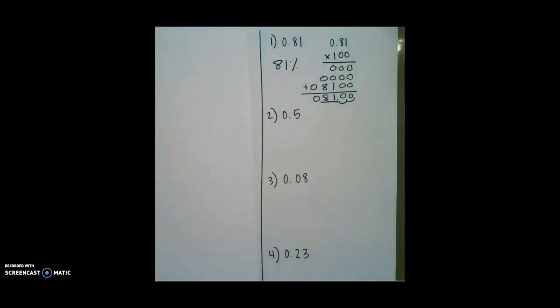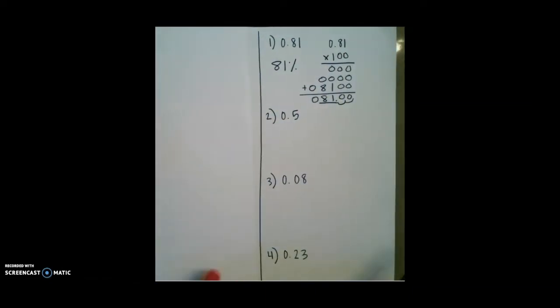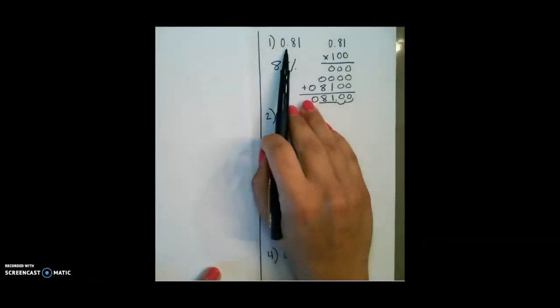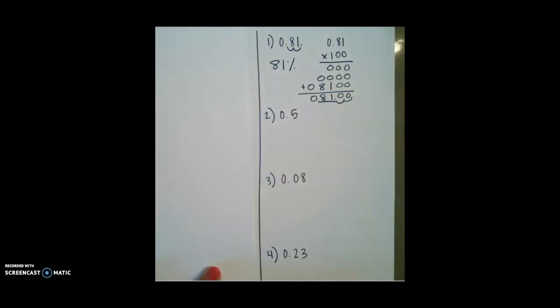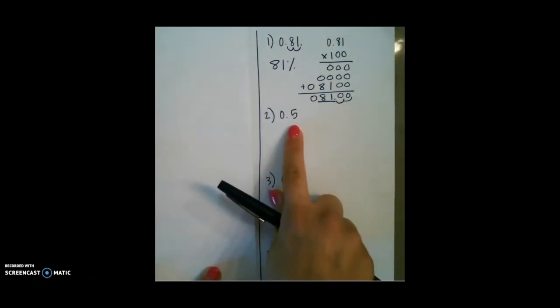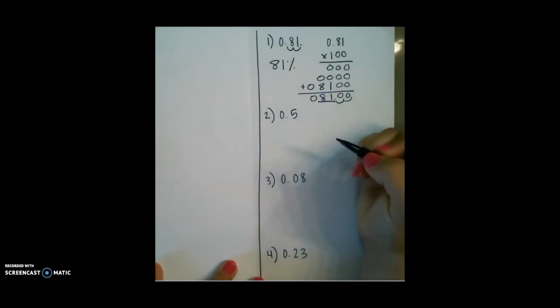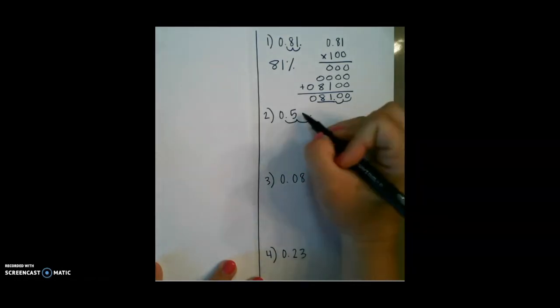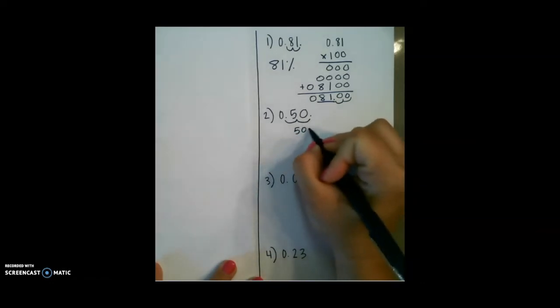There is a simpler strategy that causes us not to have to multiply by 100 every single time. When we are multiplying by 100, all we are doing is moving our decimal two places to the right and adding a percent sign. So let's look at that strategy on our second example. Again, we are multiplying by 100, but our shortcut is to move the decimal two places to the right, add a zero because we did have an empty spot here, and then add a percent sign.